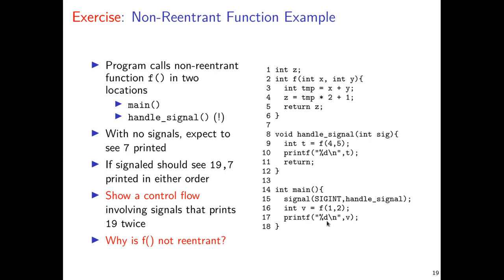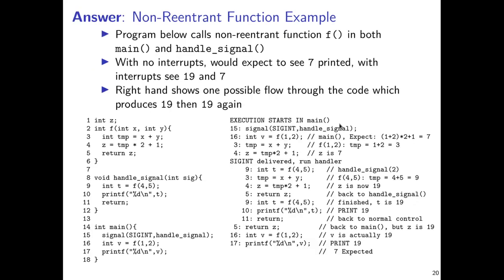The next slide has a detailed step-by-step textual version of this trace. To summarize: the main execution runs some lines in F, then right before 'return Z' at line 5, the interrupt occurs. The signal handler runs F(4,5), storing 19 into Z, prints 19, then returns. Normal control resumes, and F returns Z — which is now 19 — printing 19 again. The presence of global variables is the primary thing that makes a function non-reentrant.